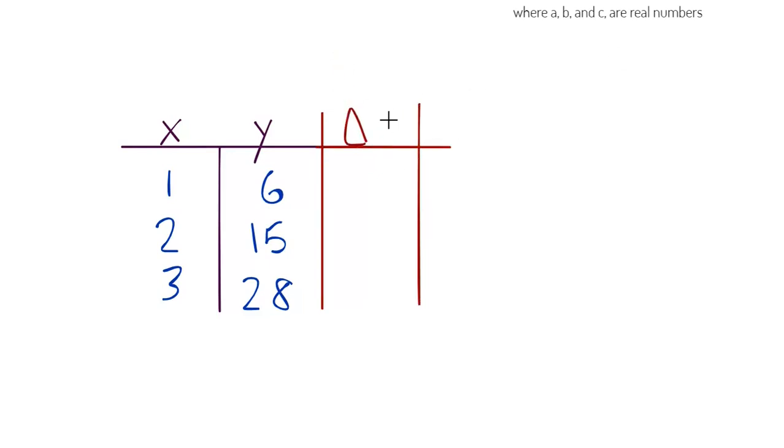Okay, that delta means change. So the change in y. And then we're going to do the change in the change. Now, don't write this. I just use it as a symbol. This is the second change. That's what they really call that. The change in the change of y. So, first off, let's figure out how y is changing. So from here, from 6 to 15, y is increasing by how much? You should get 9. That's increasing by 9. From 15 to 28, it's increasing by 13.